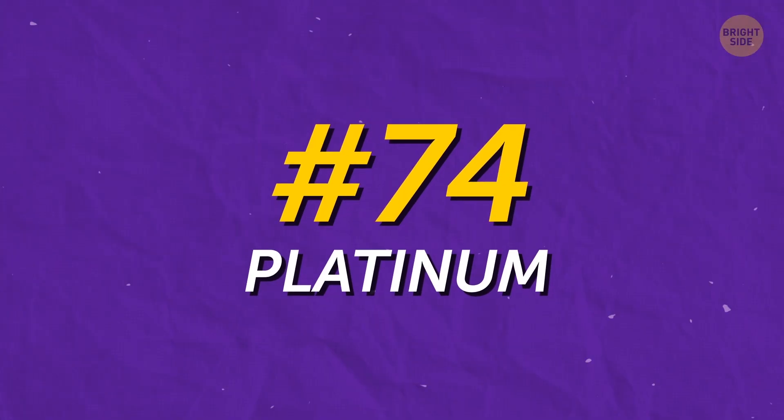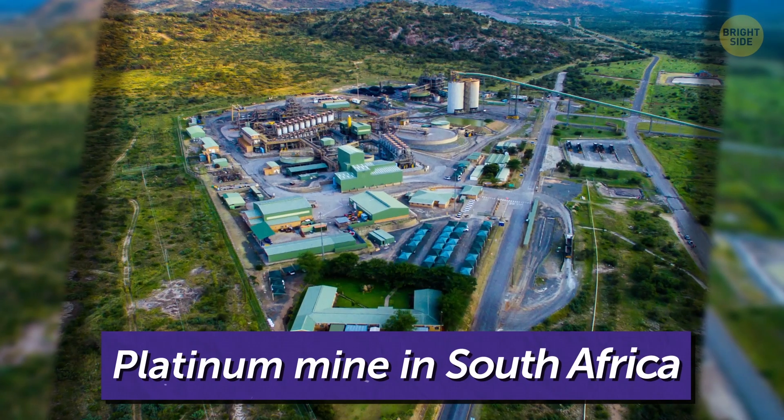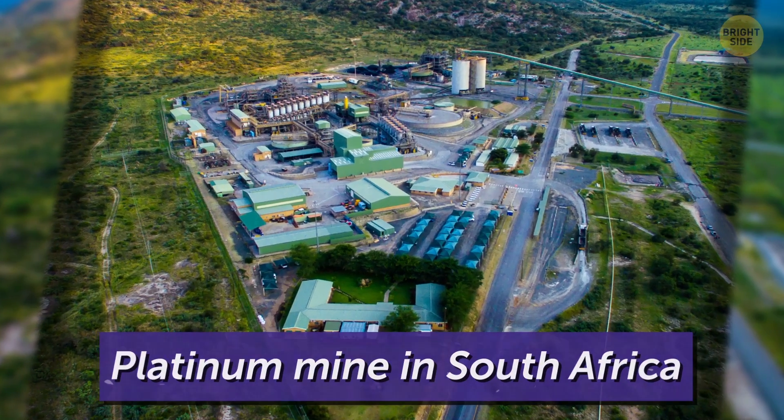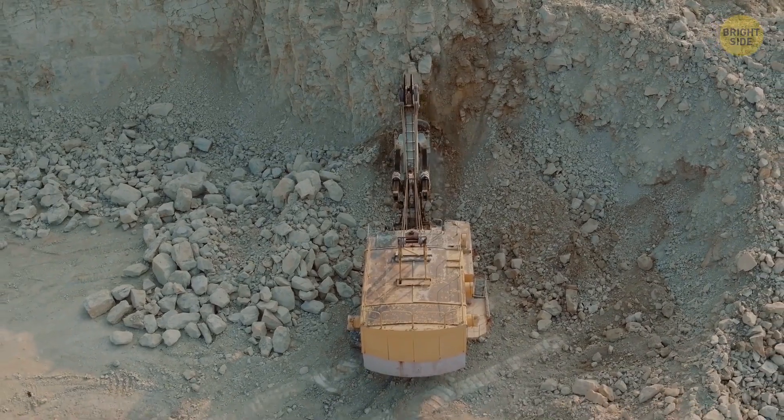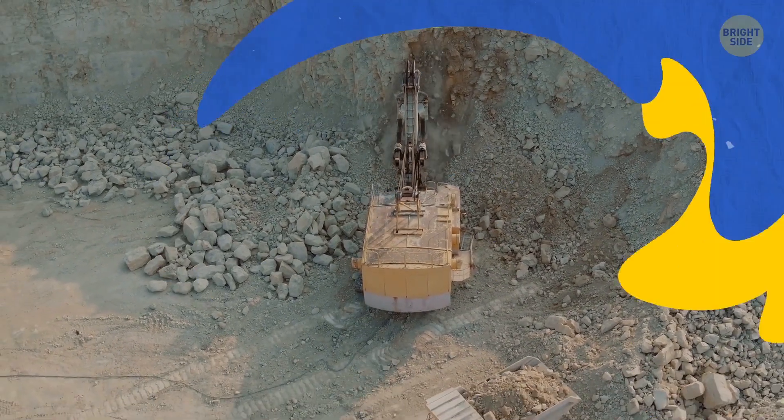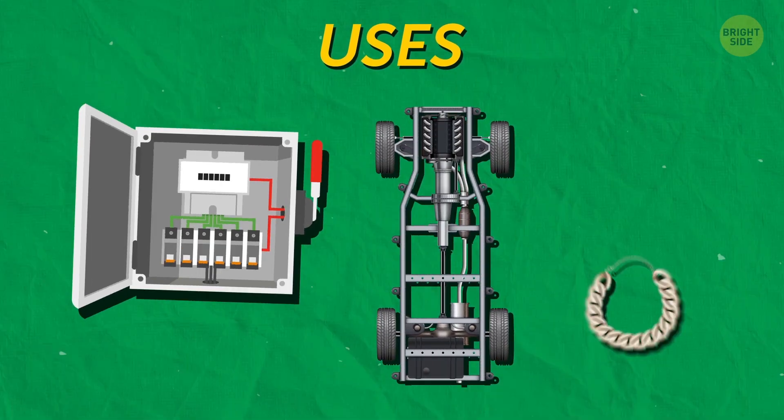We're getting closer, folks! At number 74, we have Platinum. It's mostly found in copper and nickel ores in South Africa. This guy is so rare that only a few hundred tons are produced every year. And it has many uses, too, like electrical contacts, equipment, and costly jewelry.